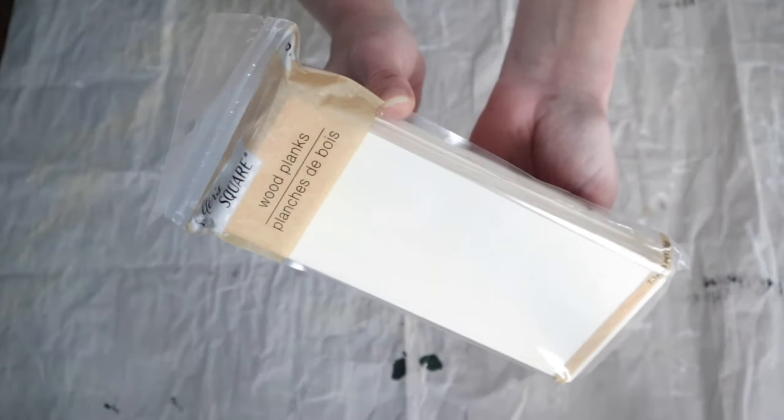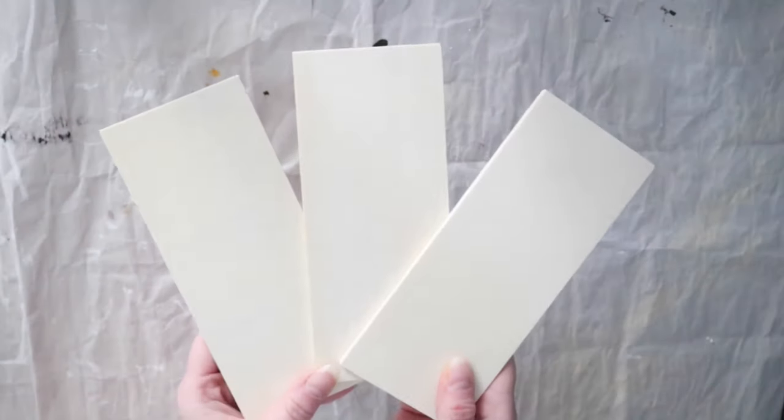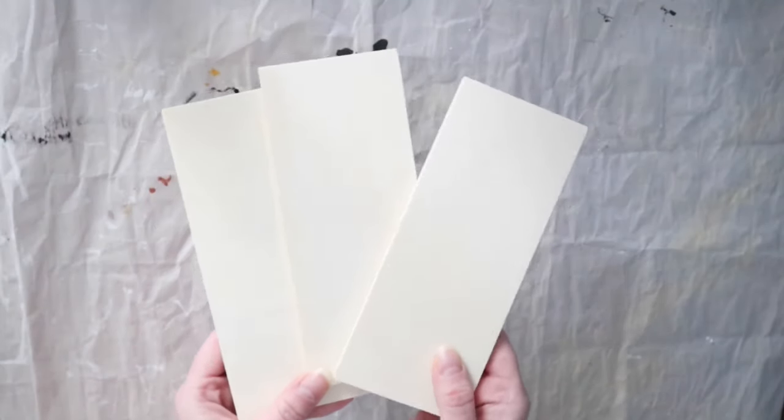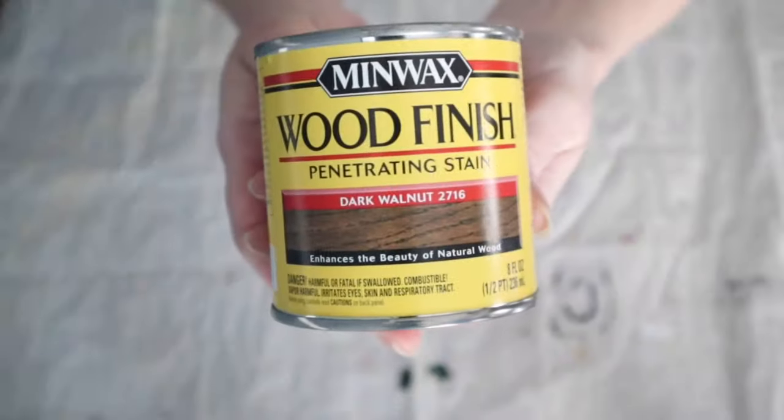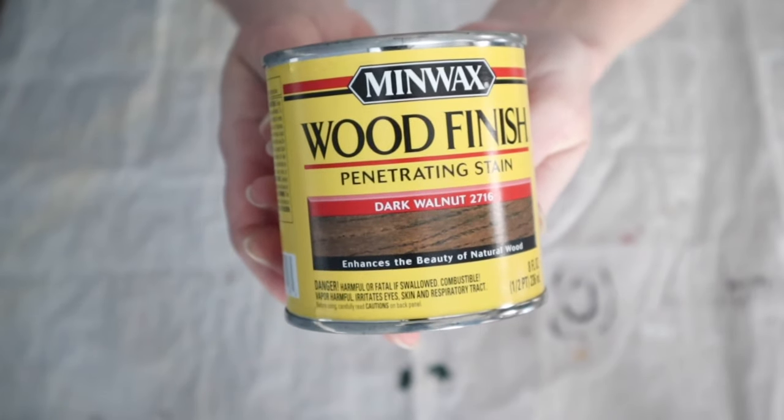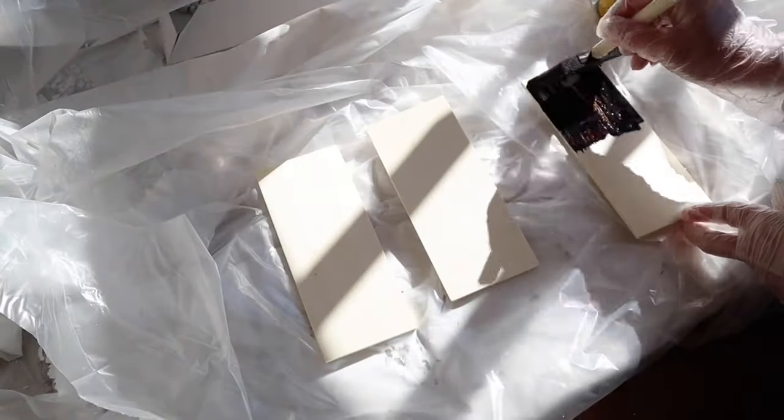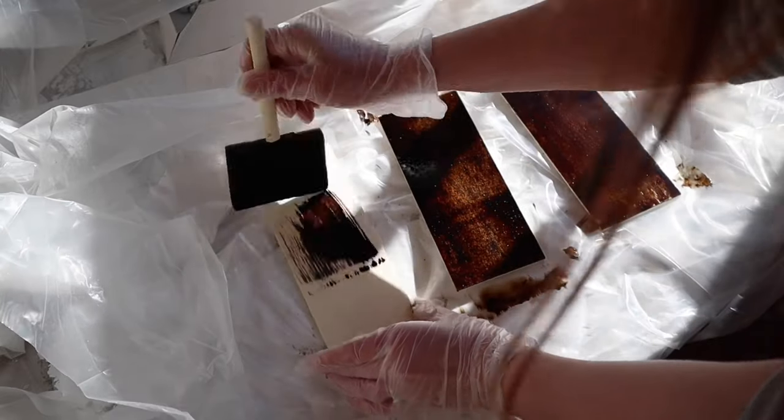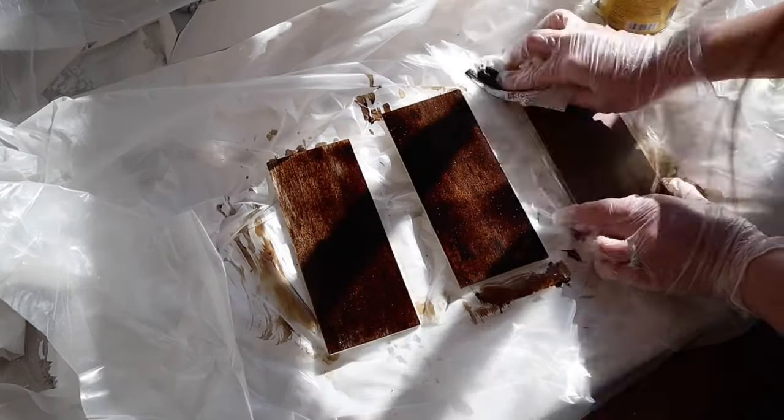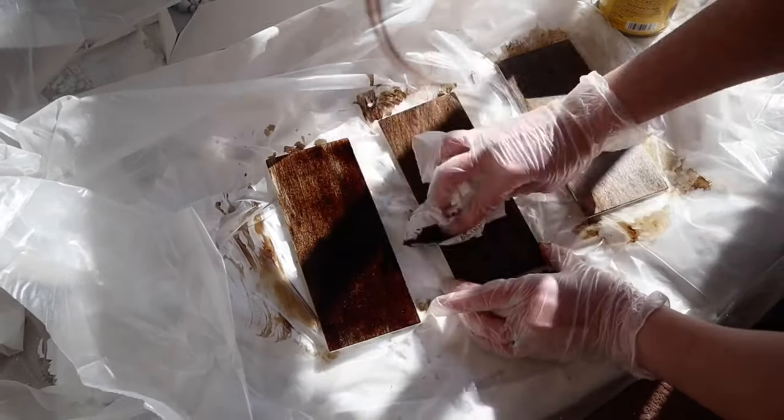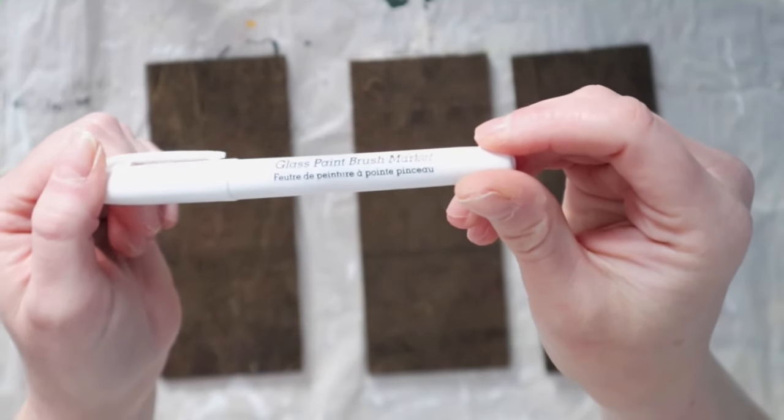I found these wood rectangle planks in the craft section at Dollar Tree and I knew exactly what I wanted to do with them. I'm just going to take three of them and stain them dark walnut. If you don't have stain on hand, you can also achieve the look by staining the planks with coffee or tea. I covered both sides with a light coat and let them dry overnight. The next day they were completely dry.